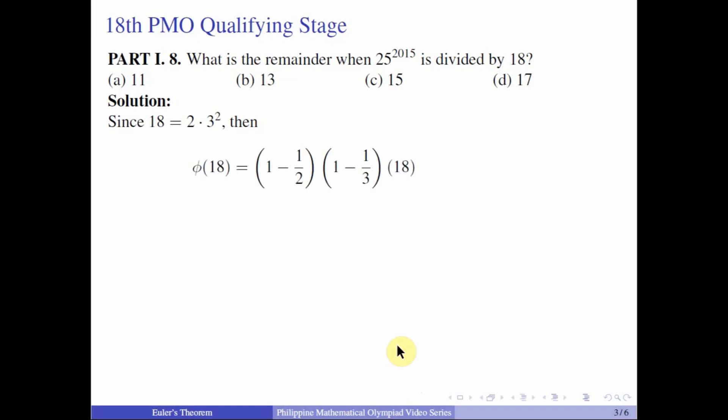18 PMO qualifying stage, part 1 number 8. What is the remainder when 25 raised to 2015 is divided by 18? Alright, so let us check the prime factorization of 18. 18 is equal to 2 times 3 squared. So which means that phi of 18 is equal to 1 minus 1 half times the quantity 1 minus 1 third times 18, which is equal to 6. And we know that 25 and 18 are relatively prime, so the GCD is equal to 1.